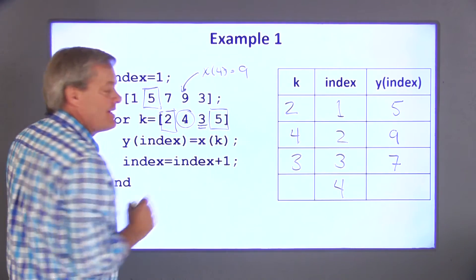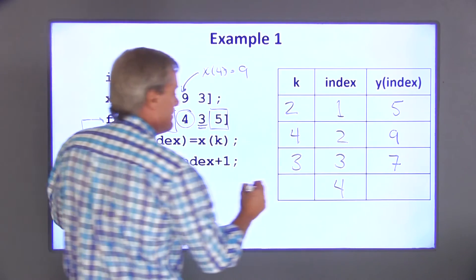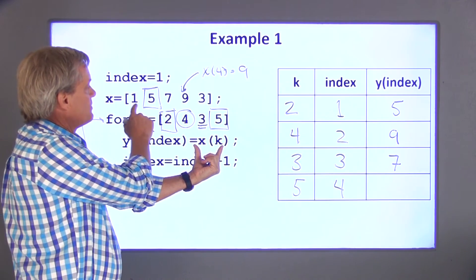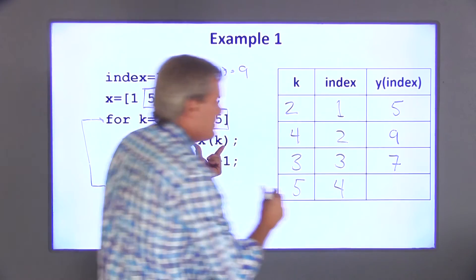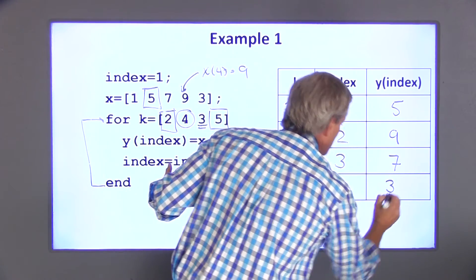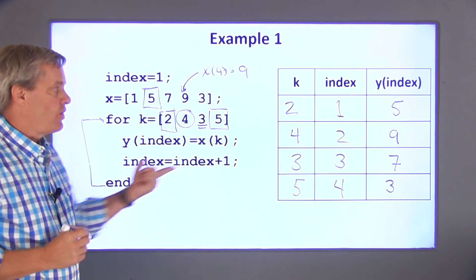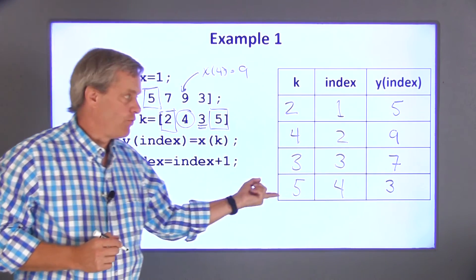Go back up to the for statement. We're finally at the last element in the array. So the last time through the loop, k is equal to 5. x of 5, x of 1, 2, 3, 4, 5 is 3. So y of index gets set equal to 3. We add 1 to index and end. So this is the end of the for loop.